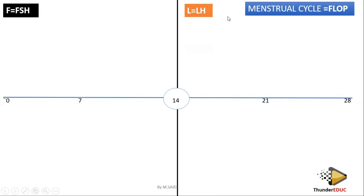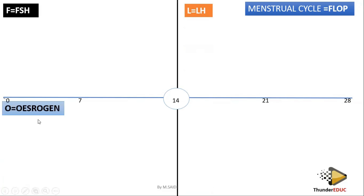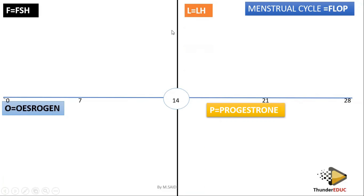Then label them: F is follicle-stimulating hormone, L is luteinizing hormone, O is oestrogen, and P is progesterone. By taking the first letter it makes the word FLOP. So you name them one, two, three, four — that's how you must name them. It makes what you call the FLOP method.